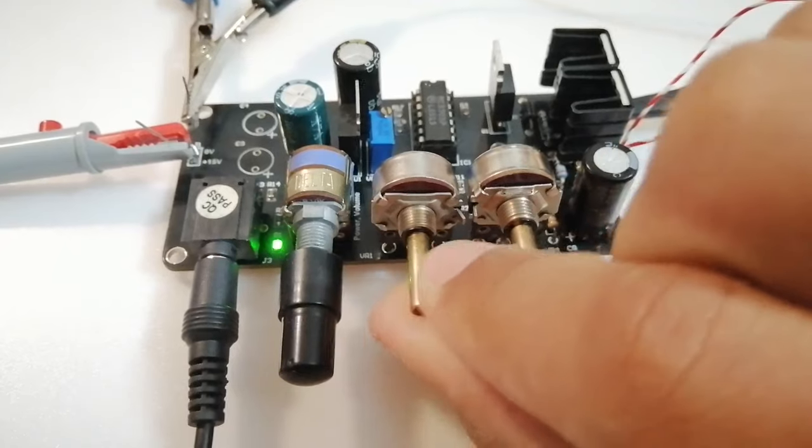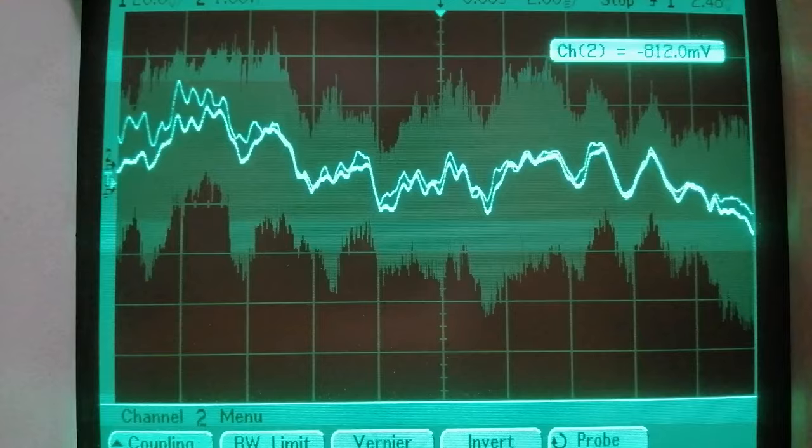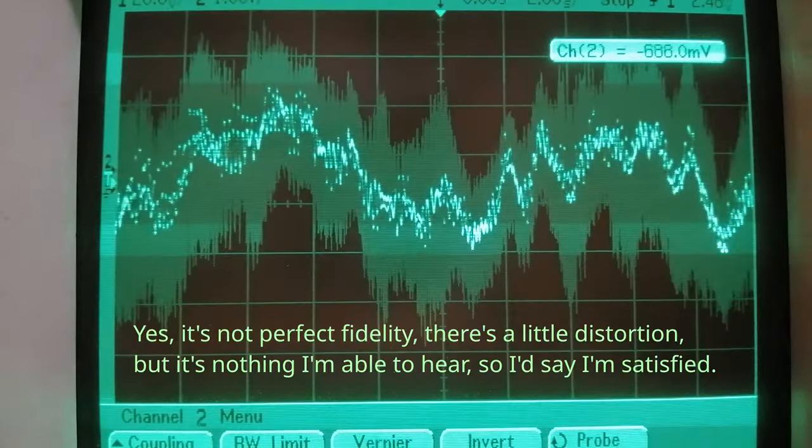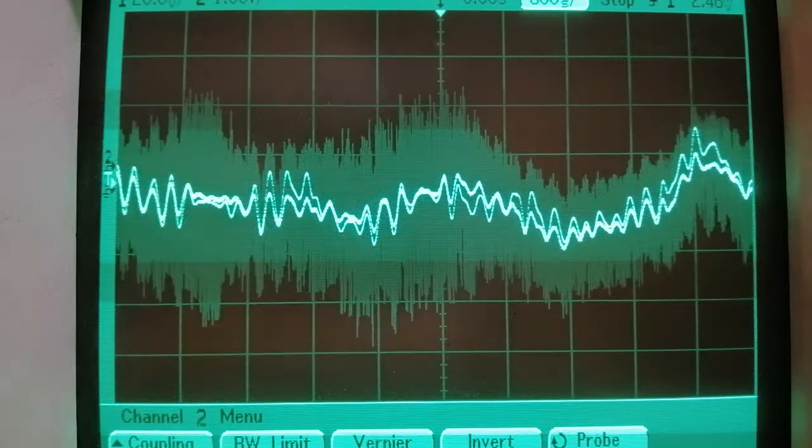The potentiometer on the left controls the treble and the one on the right is for the bass. Looking at the oscilloscope trace for the music while turning these potentiometers doesn't really show a meaningful difference although listening to the music it's definitely noticeable.